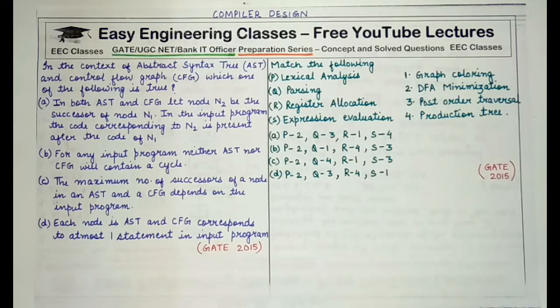Both these questions appeared in GATE 2015 paper. So starting with our lecture and first question, the question says that in the context of abstract syntax tree, that is AST, and control flow graph, which is CFG, which one of the following is true? So the options are: